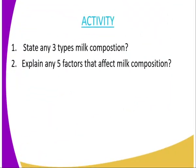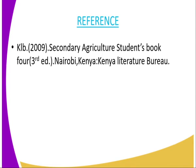We have come to the end of today's lesson, and I will mark the end by giving you an assignment. Question one: state any three types of milk composition — the components found in milk as we have discussed. Question two: explain any five factors that affect milk composition. I have explained about seven of them; you are required to explain any five as discussed in this lesson. For reference, you can refer to Secondary Agriculture Student Book Form, published by the Kenya Literature Bureau.